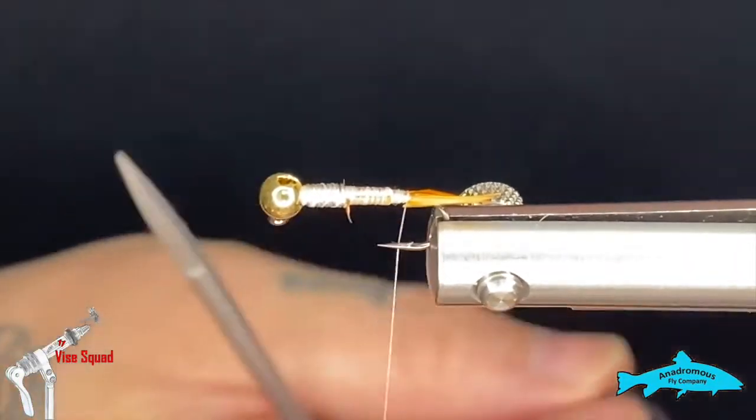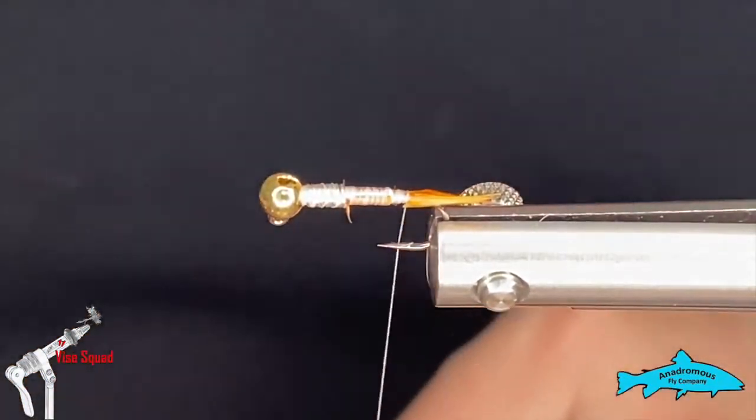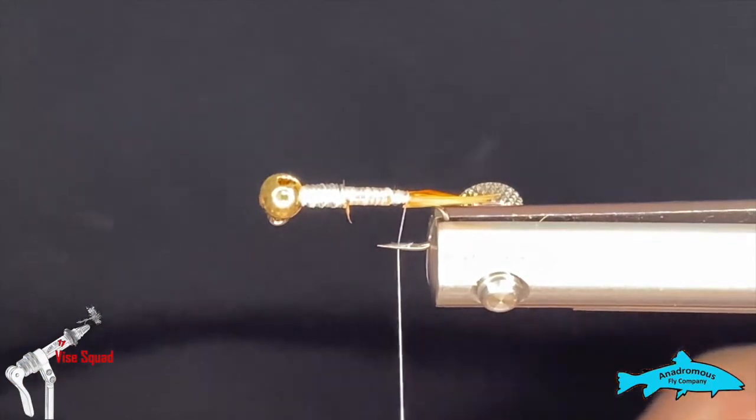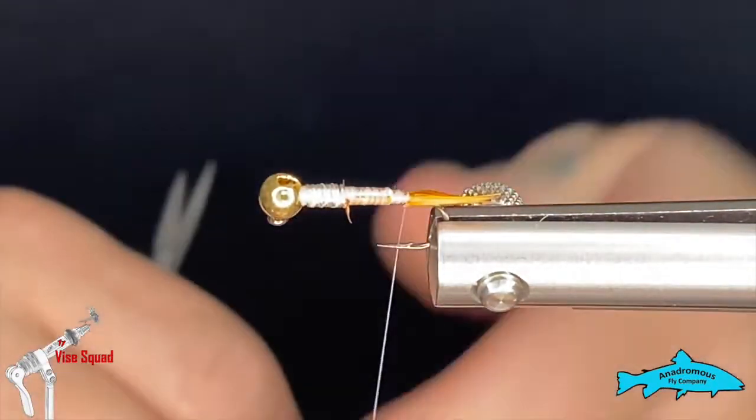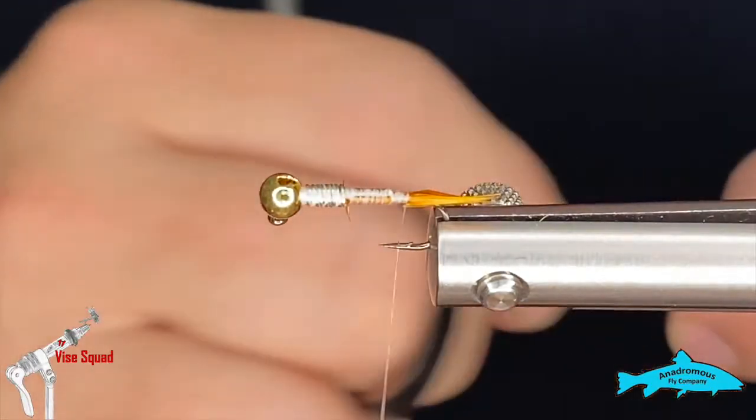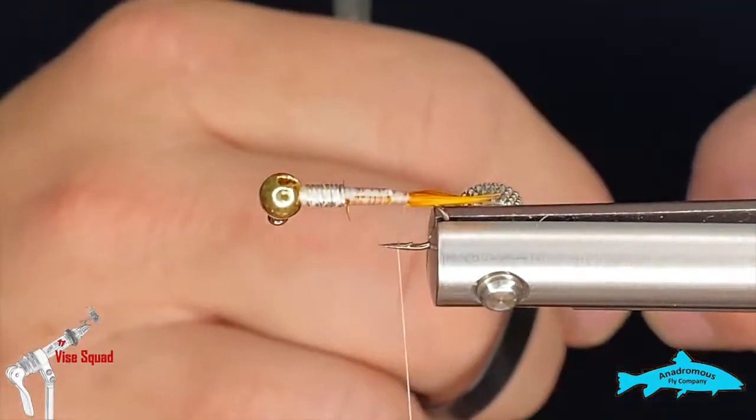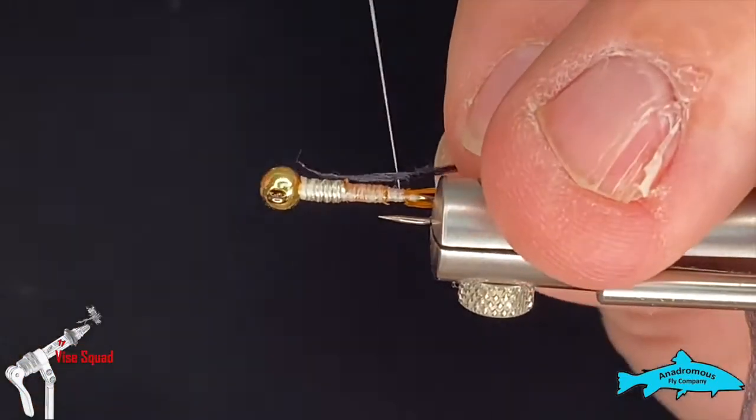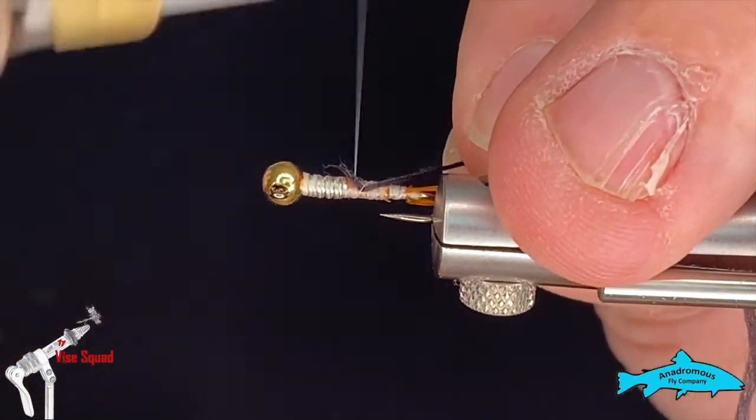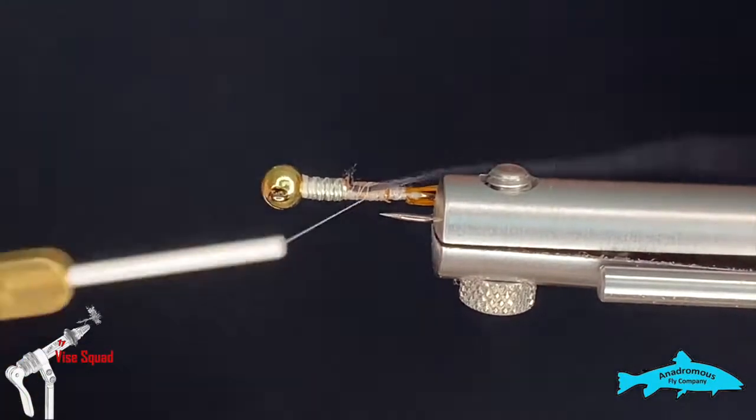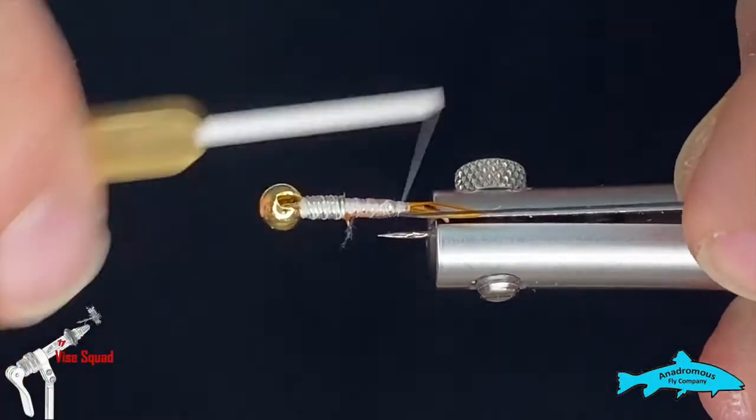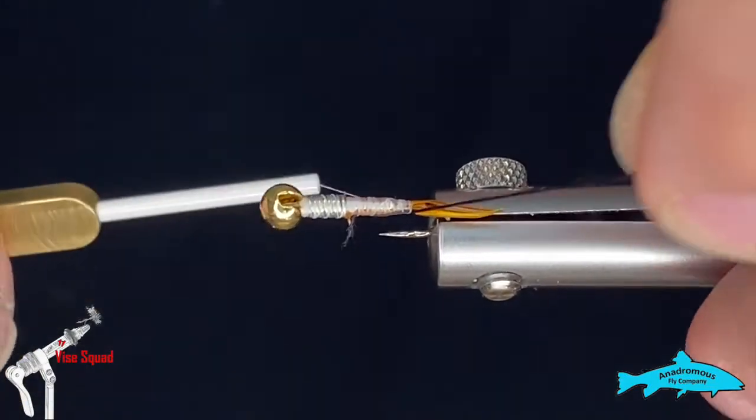Something like that. You can mess around with them after we get the fly tied as well. Next we're going to grab a piece of black uni stretch and we'll tie that in on the far side here, same as we would do with wire.